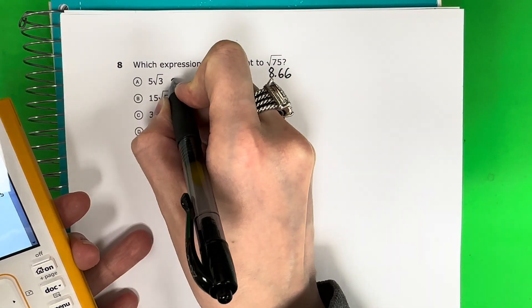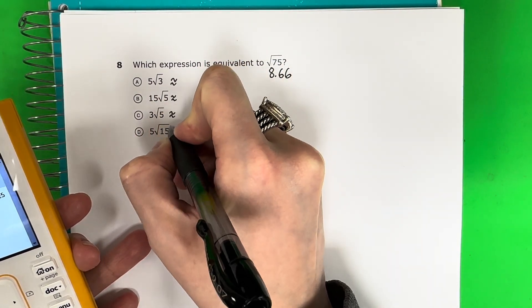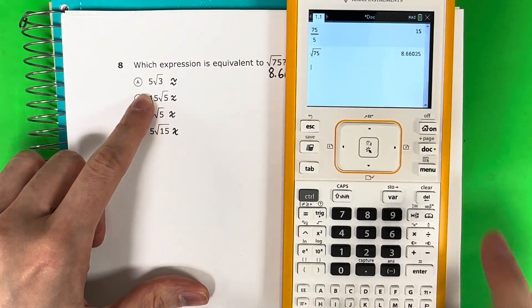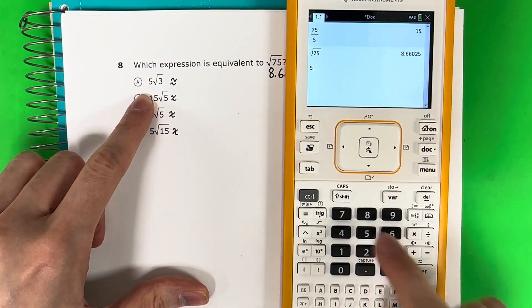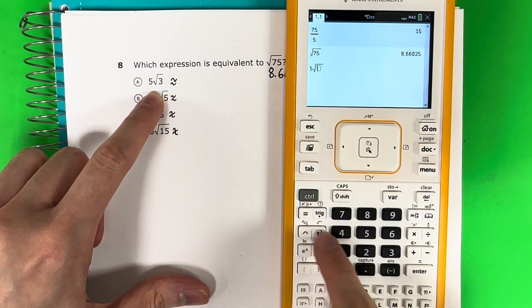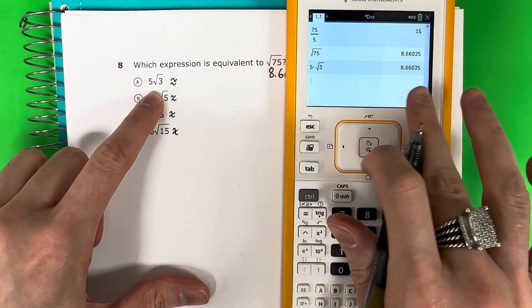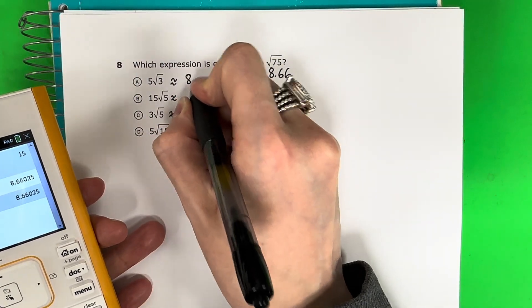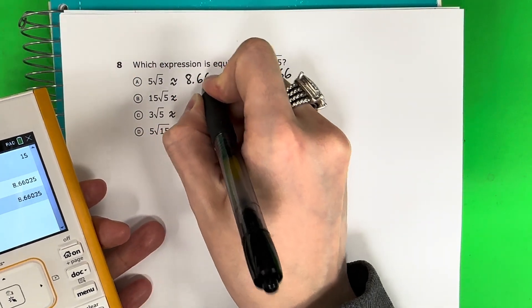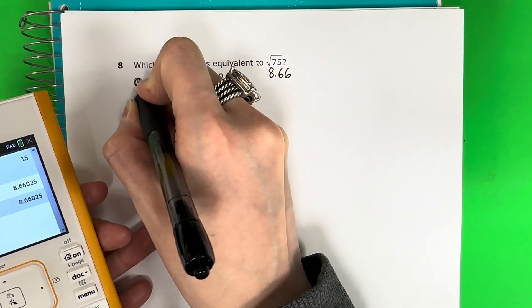Now I'm going to put each answer choice in the calculator one by one. Let's put in 5 times the square root of 3 — press Ctrl, X squared, 3, then enter. That gives 8.66025. It's the same number, so that's how I know that's the answer. It's the same number, so A is my answer.